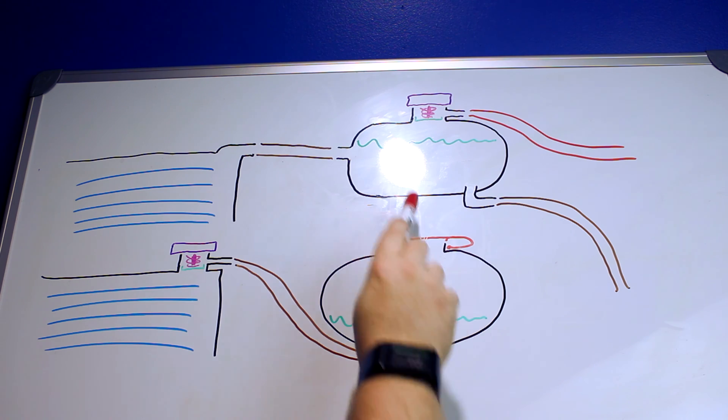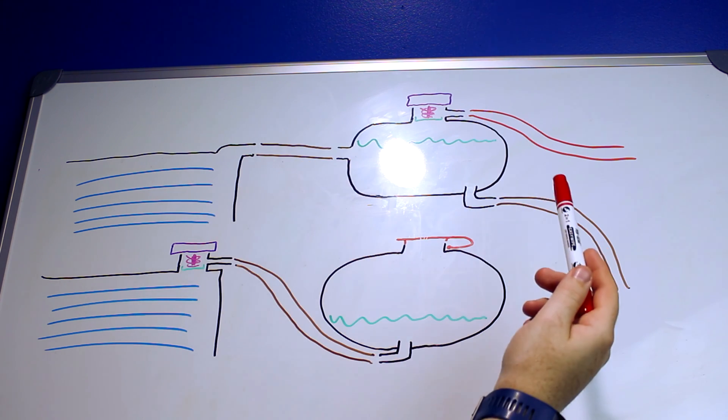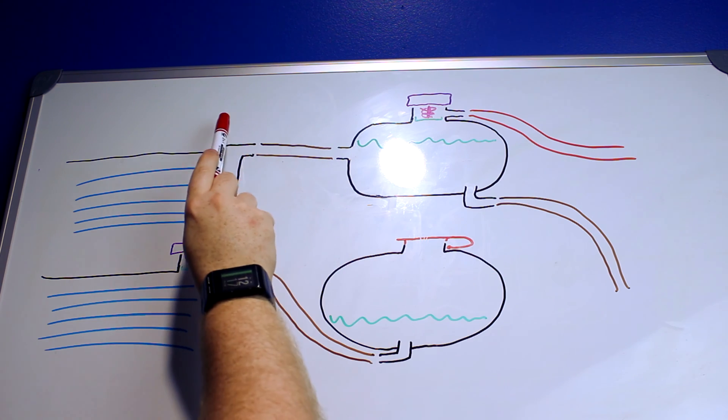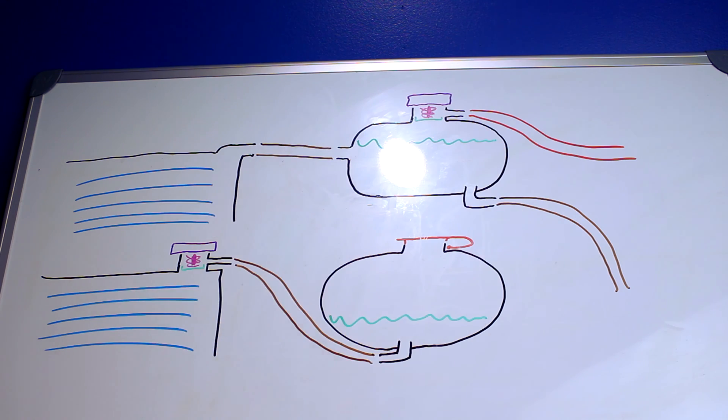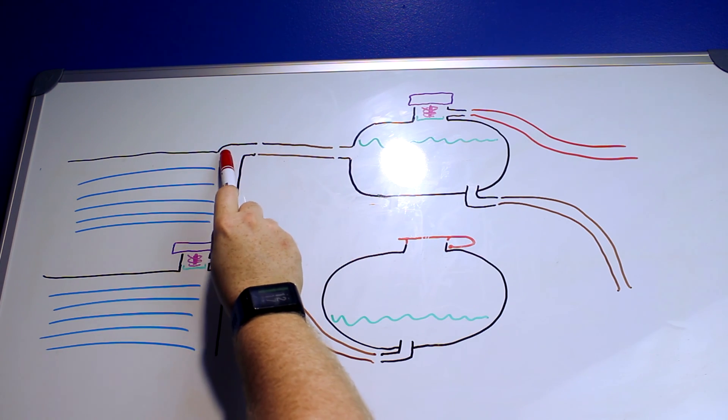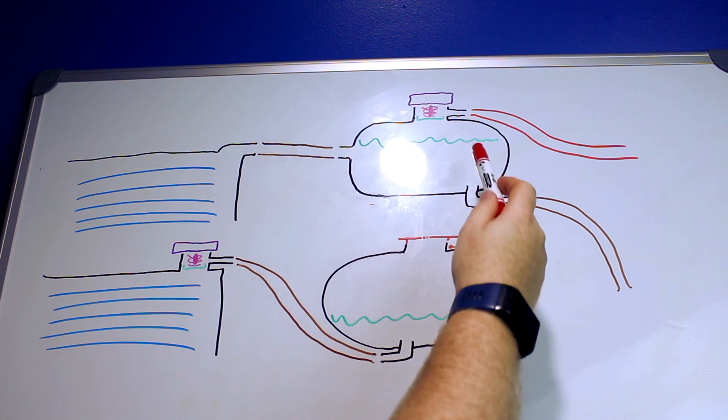Another design you'll see is the expansion tank, named because it expands the pressurized side of the system. Instead of there being a radiator cap on the radiator you have an expansion tank cap on the expansion tank. Again, this is the highest point in the radiator. Coolant will travel down this tube and into this tank.